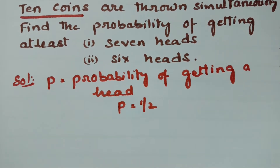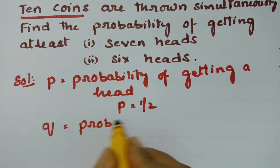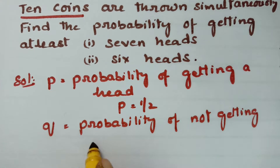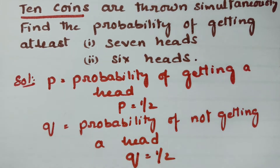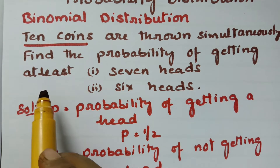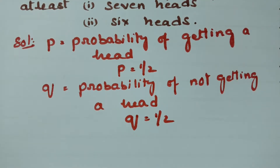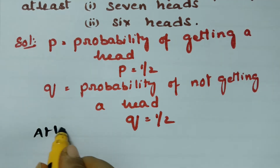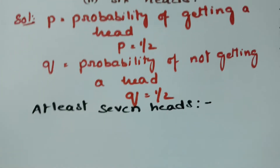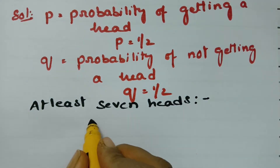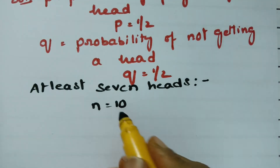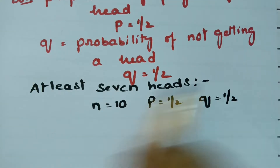Q is nothing but the probability of not getting a head. Q is equal to half. How many coins are thrown? 10 coins are thrown simultaneously. So we have to find the probability of getting at least 7 heads. N is equal to 10 coins — total 10 coins, so N is equal to 10. P is equal to half and Q is equal to half.